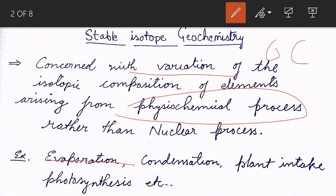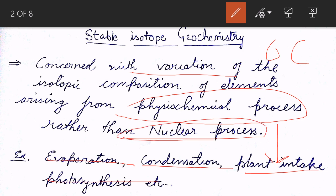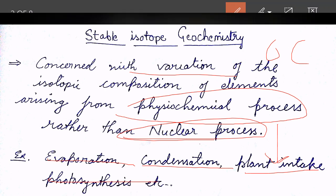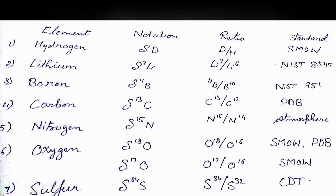These physiochemical processes can be evaporation, condensation, or plant intake from soil. Plants take up components in a certain proportion, causing variation in the concentration in the soil versus what the plant takes, and also during the photosynthesis process. There are many other examples of physiochemical processes rather than nuclear processes, and variation arising from those in isotopic concentration is called stable isotope geochemistry.